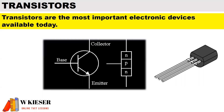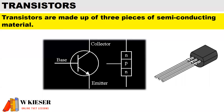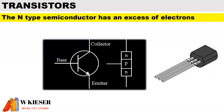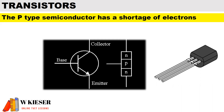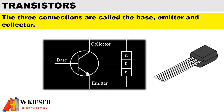In this lesson on transistors, there are some concepts we're going to cover. Transistors are the most important electronic devices available today. Transistors are made up of three pieces of semiconducting material. The N-type semiconductor has an excess of electrons, and the P-type semiconductor has a shortage of electrons. The three connections are called the base, emitter, and collector.